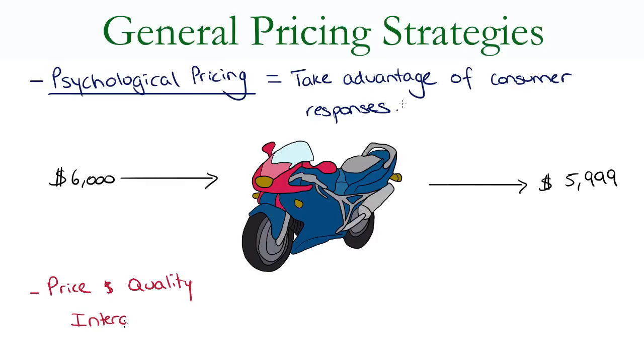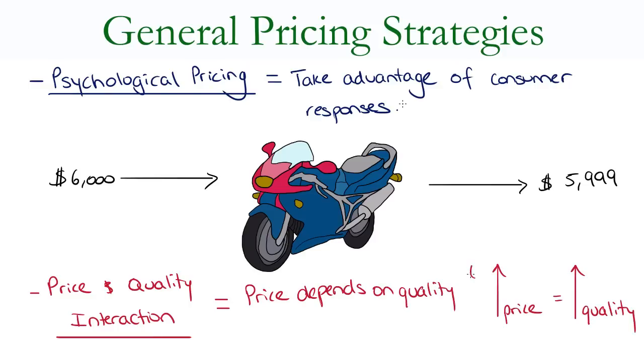Finally, price and quality interaction is just based on how high the quality of the product is. As a rule of thumb, the higher the quality of the products, the higher the price.